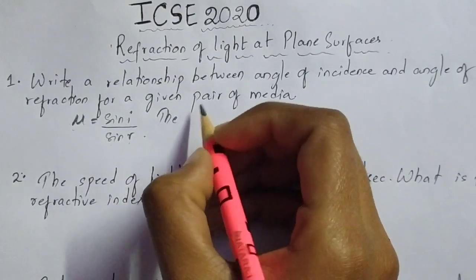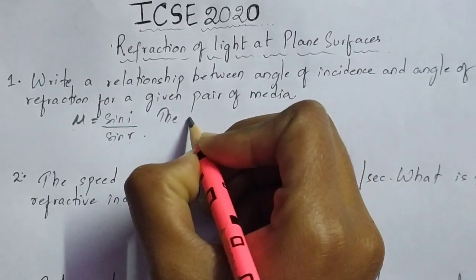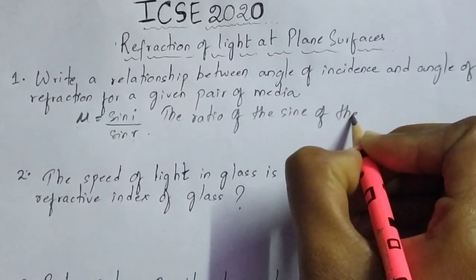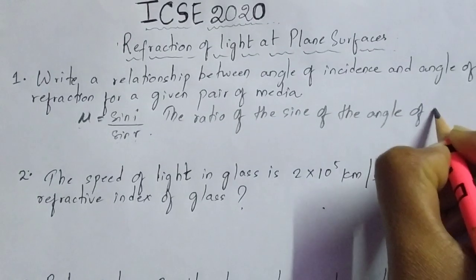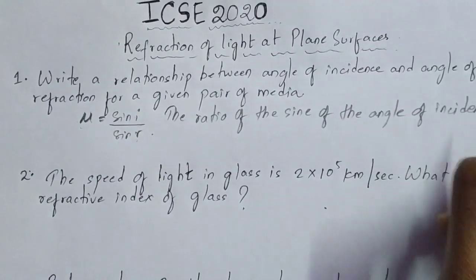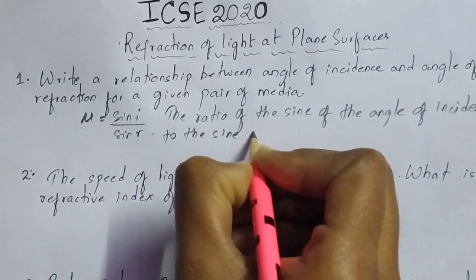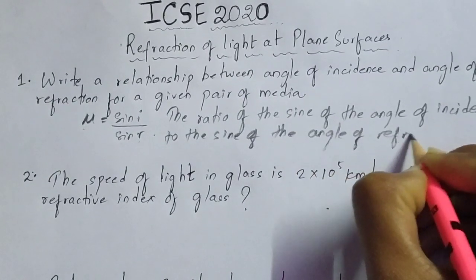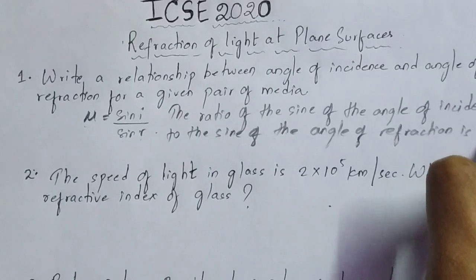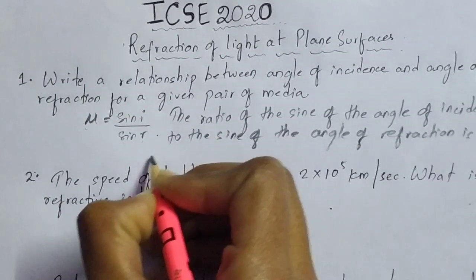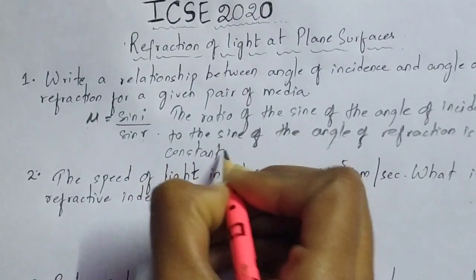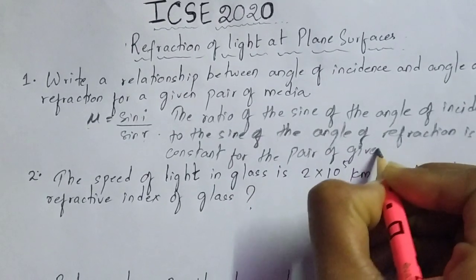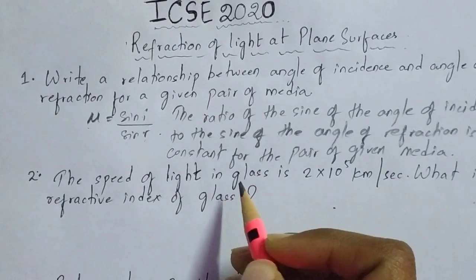This is the second law — there are two laws of refraction. The second law says that the ratio of the sine of the angle of incidence to the sine of the angle of refraction is constant for the pair of given media. I think it's not visible, so I'm writing it here. This is the second law of refraction.